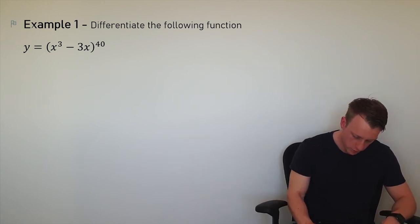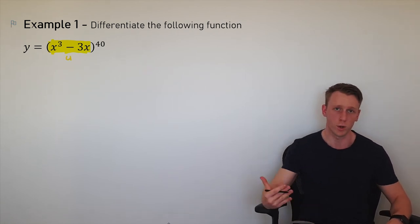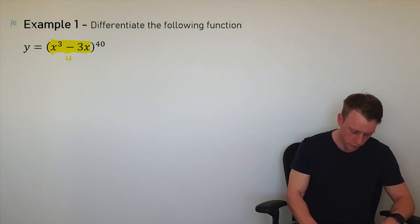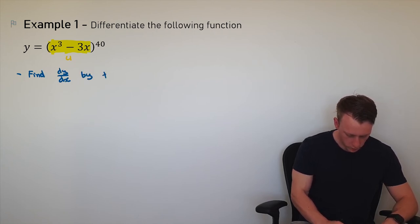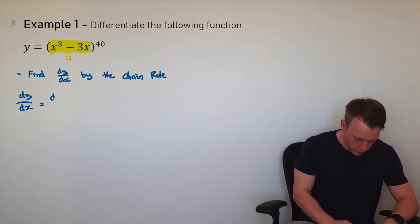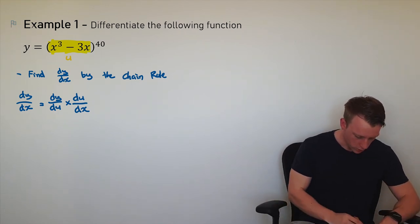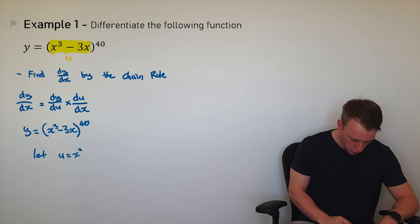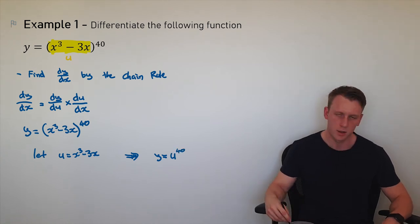So that's what we're going to do. I notice I've got to differentiate this function and it is a function within a function, because I can express it as u to the power of 40, where the inner function x cubed minus 3x is also its own respective function. So I would find dy/dx by the chain rule, reminding myself that the chain rule is dy/dx equals dy/du multiplied by du/dx. I set it up: let u equal the inside function, which is x cubed minus 3x. This implies that y equals u to the power of 40.